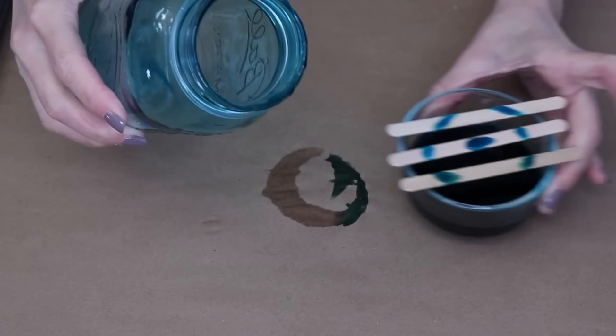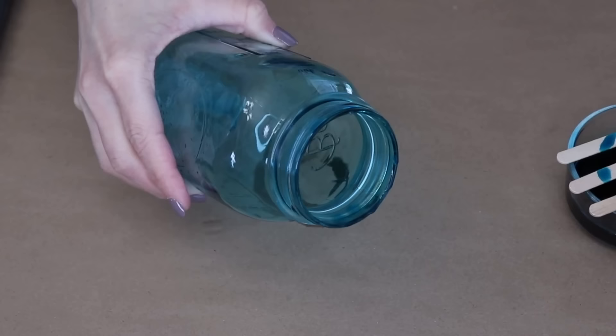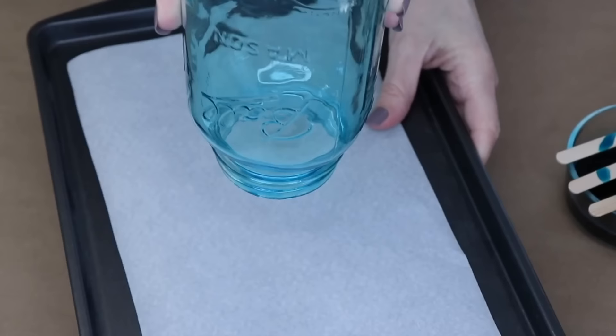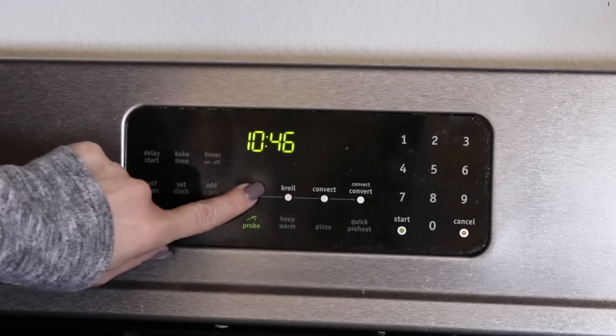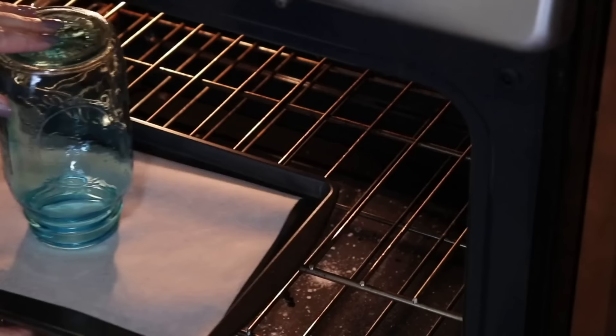Now we want to let this drip for a little bit, let it drip for about 10 minutes. Take a paper towel and wipe off any excess drips that are around the rim of the jar. Then place this upside down on a piece of parchment paper and pop it in your oven at 175 degrees for about 20 minutes.